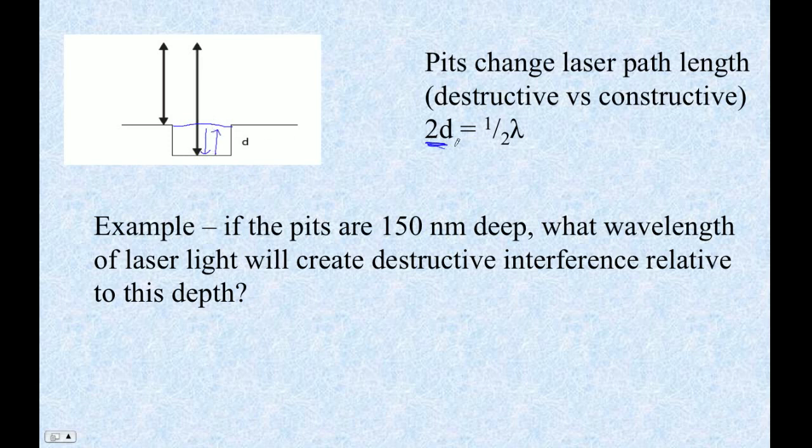If that added length is half a wavelength, then the laser is going to interfere with itself. It's going to be one half, and one half wavelength difference in distance of path is going to cause destructive interference.